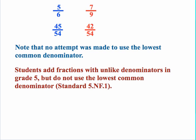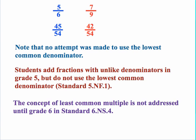It's all that's expected at this level. It's not until grade five that students will add fractions with unlike denominators, and they will not be using lowest common denominators according to standard 5NF1. Also, the concept of least common multiple — which in fractions would be the lowest common denominator — is not addressed until grade six in standard 6NS4. So at this grade level, for getting common numerators and common denominators, all students have to do is multiply: numerator times numerator, or denominator times denominator.